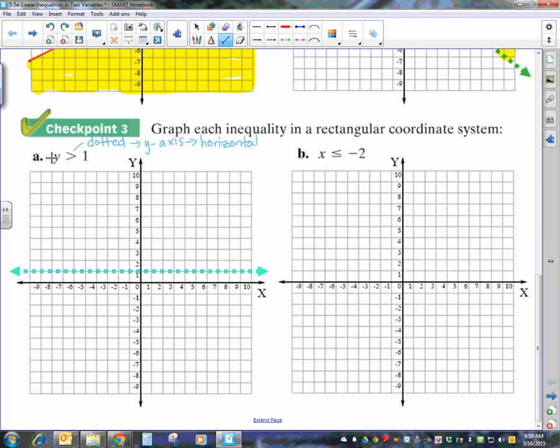Now, it says y is greater than 1. So, again, when you look at these, when you're looking at this graph, this is y equals greater than 1. The numbers that are greater than 1 are above that horizontal line, so we're going to shade above it.